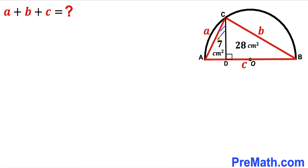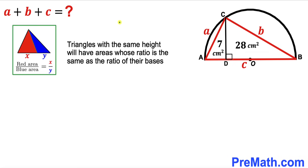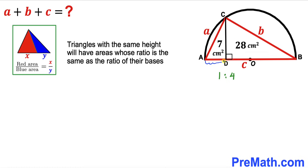In our first step, let's focus on triangles ADC and BDC. We can see both triangles have the same height CD. Recall the crucial fact that triangles with the same height have areas whose ratio is the same as the ratio of their bases. With areas 7 and 28, our ratio is 1 to 4.